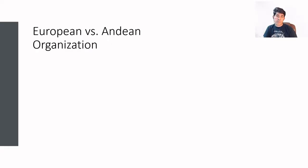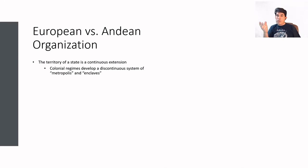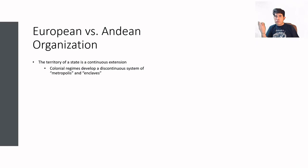There is a clear contrast between European and Andean economic organization. The territory in a typical European state — a kingdom — is a territory with a continuous extension. The change came with colonial times: colonial regimes developed a system that had a metropolis and then other regions under their control, which specialized in the extraction of very specific raw materials, minerals, and agricultural products.